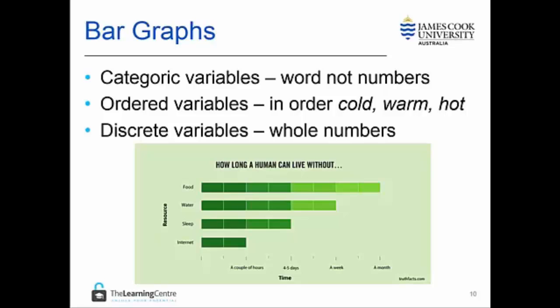Categoric variables are those described by words rather than numbers. For example, in our graph our categories relate to resources. Ordered variables relate to categories that can be put in an order of some kind such as cold, warm, hot, boiling and so on. Discrete variables are those that can be described by whole numbers only.